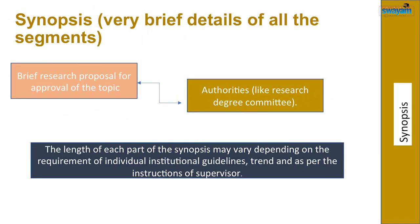First of all, let us discuss about synopsis. What is a synopsis? Synopsis is a brief research proposal of your entire work — basically it's a concept note of your entire project proposal. You put all the things in brief and put this proposal before the authority which is going to approve your research proposal. These authorities may be research degree committees, or the name may differ in certain institutes. You will have to plan each element of research; that planning — a full-proof planning — must be presented in concise form. The length of synopsis may vary depending upon the requirement, subject, and institutional guidelines.